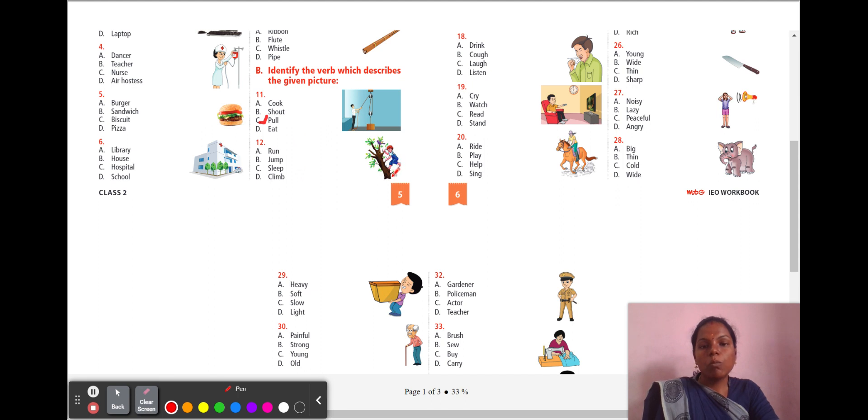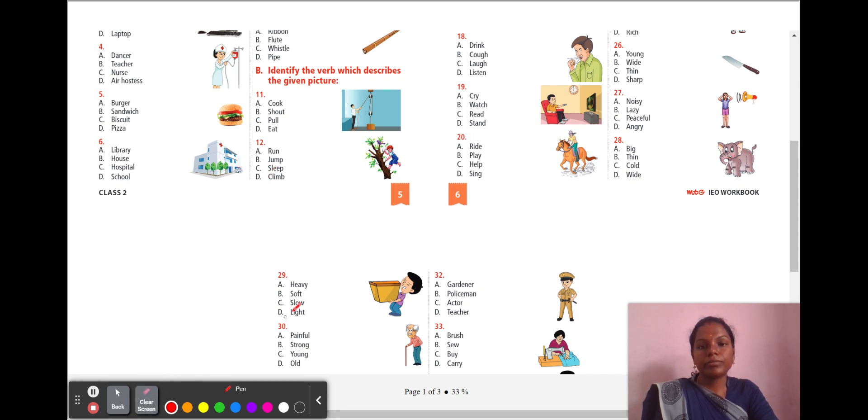12th question. The boy is climbing over the tree. So, what is the action here? A, run. B, jump. C, sleep. D, climb. Your answer is climb. 13th question. What is the woman doing? Is she laughing, climbing, cook, clean? What is she doing? She is cooking in the kitchen. So, your answer is cook.